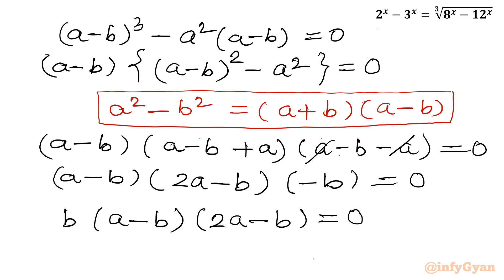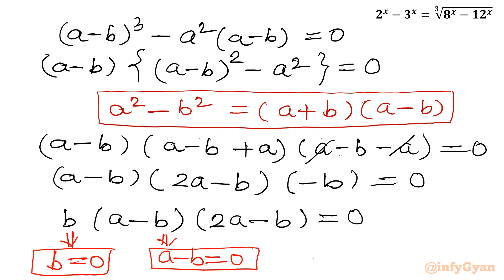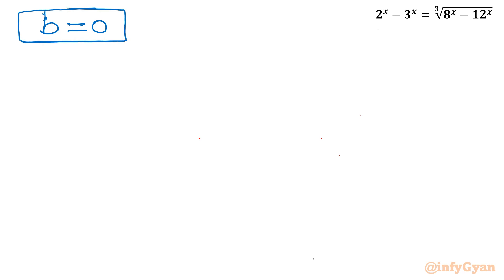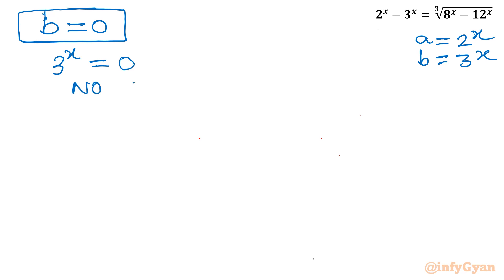From the factored equation f·g·h = 0, either b = 0, or a minus b = 0, or 2a minus b = 0. We will solve these three equations one by one. For Case 1, b = 0 means 3^x = 0. But an exponential function can never equal 0 — it never intersects the x-axis — so no solutions are possible from this case.